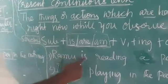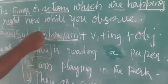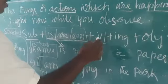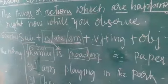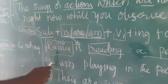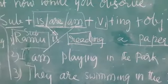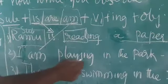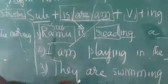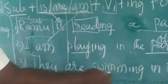For example: 'Ramu is reading a paper.' Ramu is the subject. Since it is singular, we took 'is'. V1 here is 'read' and the -ing form gives 'reading'. The object is 'a paper.' Another example: 'I am playing in the park.' Since the subject is 'I', we take 'am', then V1 plus -ing gives 'playing', and 'park' is the object. One more: 'They are swimming in the river.' 'They' is plural so we take 'are', swim plus -ing gives 'swimming', and 'the river' is the object.